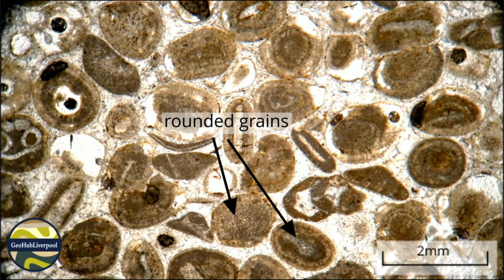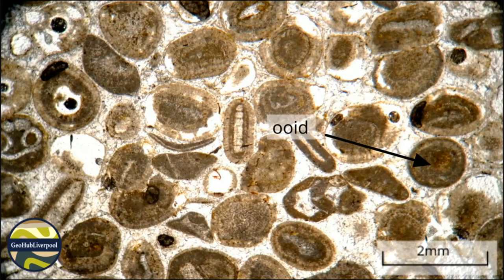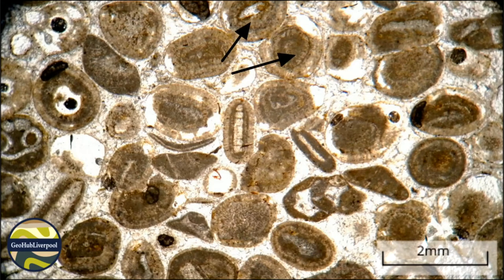These spherical non-skeletal grains are called ooids and they are mainly composed of carbonate mud or micrite. They have a light brown colour under plain polarised light.